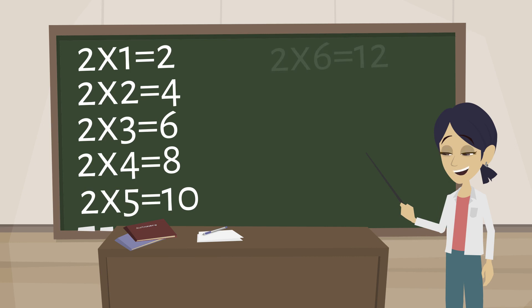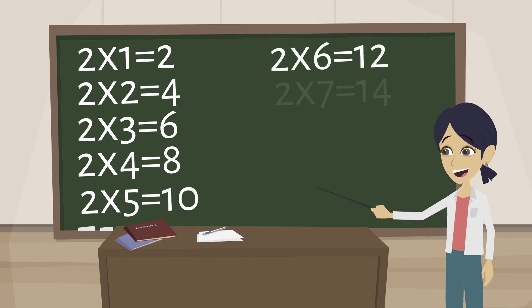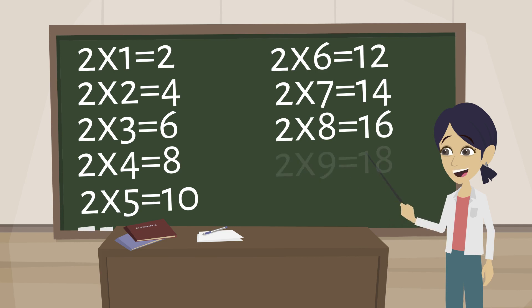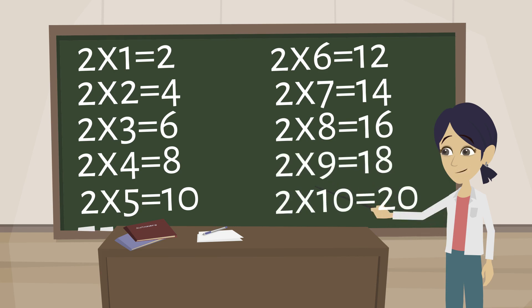2 6s are 12, 2 7s are 14, 2 8s are 16, 2 9s are 18, 2 10s are 20.